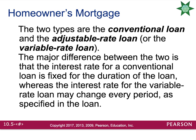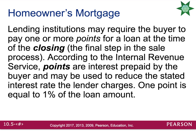The major difference between the two is that the interest rate for a conventional loan is fixed for the duration of the loan, so it will not change. The interest rate for a variable loan can change every period as specified in the loan. Lending institutions may require the buyer to pay one or more points at the time of closing. According to the IRS, points are interest prepaid by the buyer and may be used to reduce the stated interest rate the lender charges. One point is equal to 1% of the loan amount.